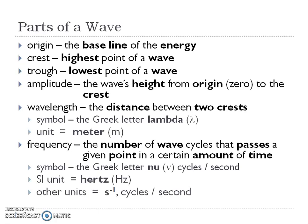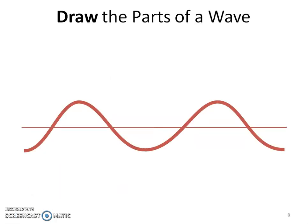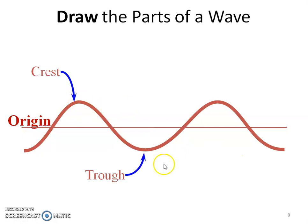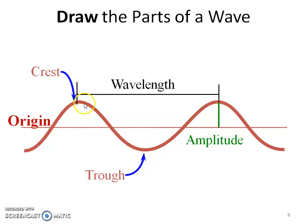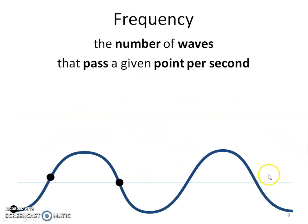So these are the parts of the wave. The first thing to draw is a line representing the origin — our starting point, our ground zero. Then draw a wave with at least two hills. The top of the hills are called the crest. The bottom of the hills are called the trough. The distance from the zero mark to the top of the crest — or bottom of the trough — is called the amplitude. The distance from crest to crest or trough to trough is called the wavelength.